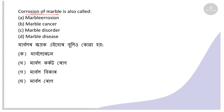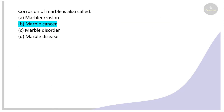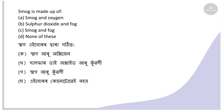Next: Corrosion of marble is also called what? Options: marble erosion, marble cancer, marble disorder, marble disease. As discussed in a previous video, the right answer is marble cancer. The deterioration of marble is called marble cancer.